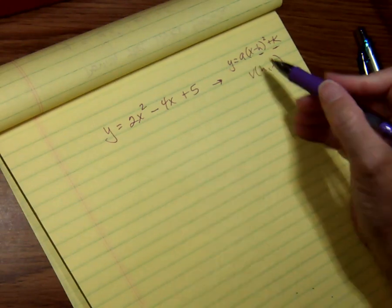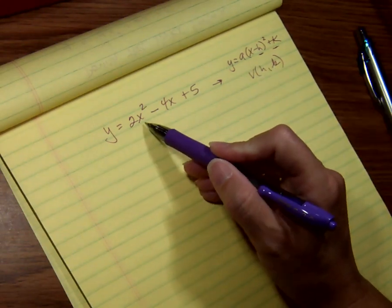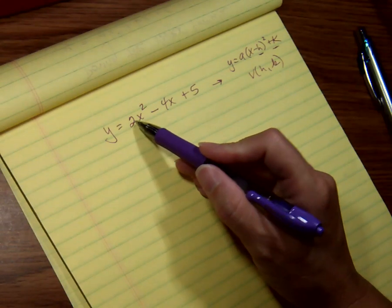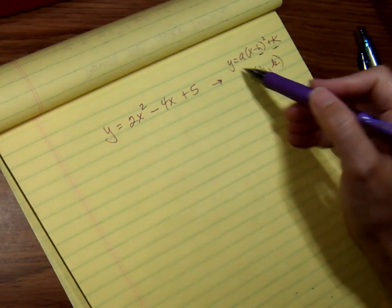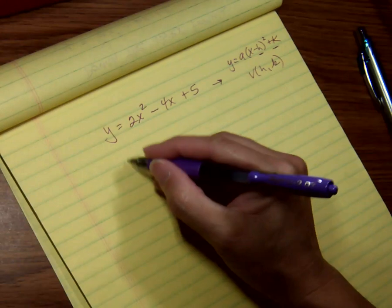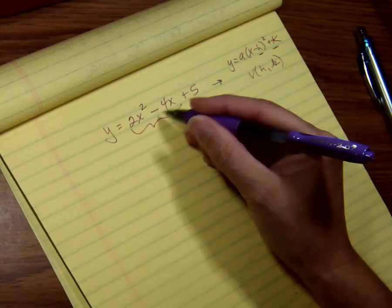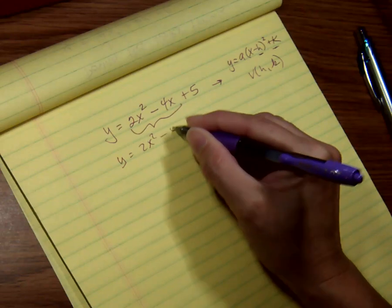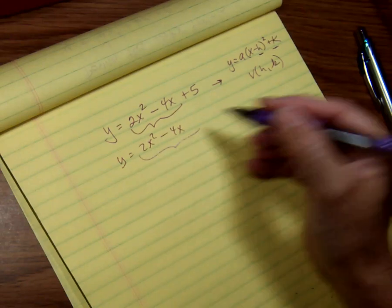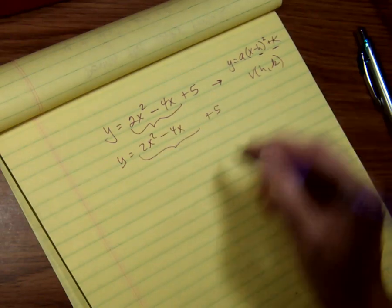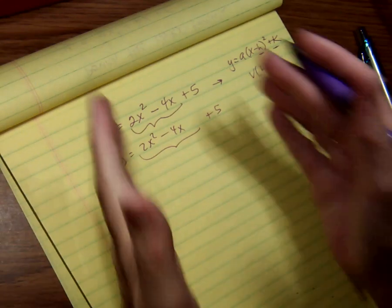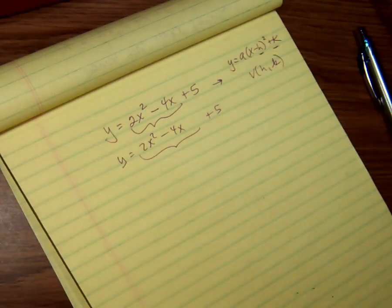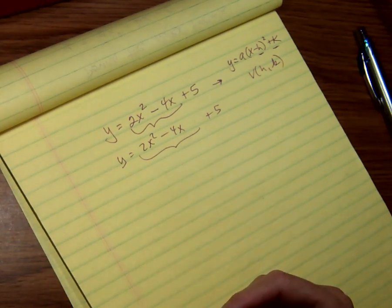So the first thing I need to do is get rid of this 2. The problem is I can't move it to the other side because y has to be all by itself. So what I'm going to do is kind of pair these two up. So let me rewrite it. These two will stay together because I need to complete this square. And the 5 is going to move over because the only thing I can do is rewrite it. I cannot change its value, nor can I do anything to both sides because the y has to be by itself.